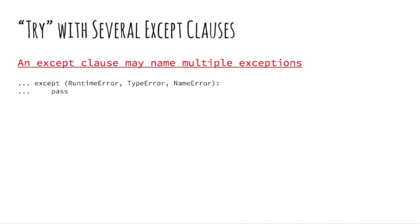A try statement may have more than one except clause to specify handlers for different exceptions. At most, one handler will be executed. Handlers only handle exceptions that occur in the corresponding try clause, not in other handlers of the same try statement. An except clause may name multiple exceptions as a parenthesized tuple as we can see in the example above.